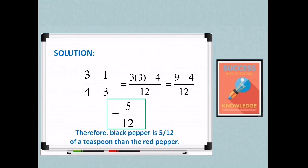So therefore, we can conclude that black pepper is 5/12 of a teaspoon more than the red pepper. So that concludes our lesson regarding subtracting similar and dissimilar fractions. So it's now your time to get your pen and paper and do our activity for today.